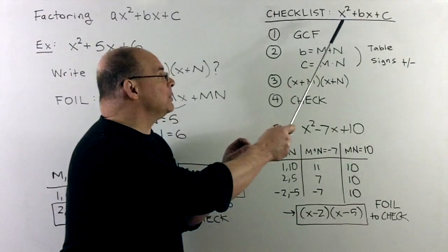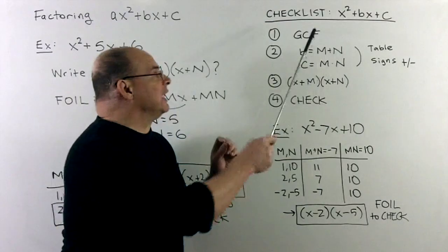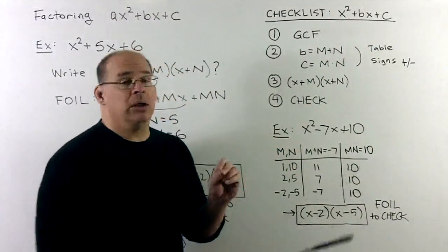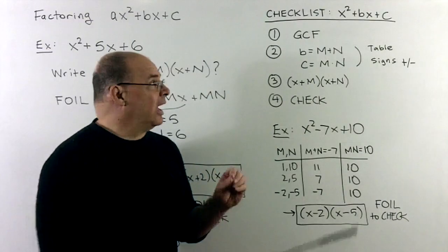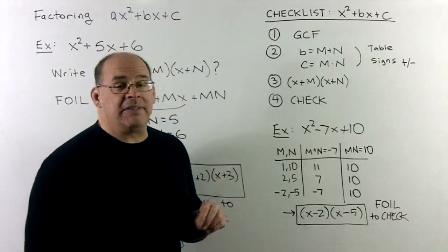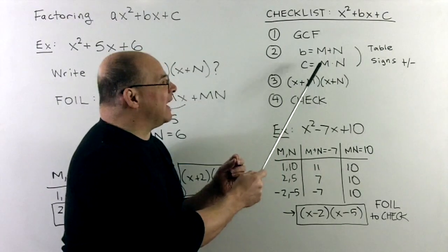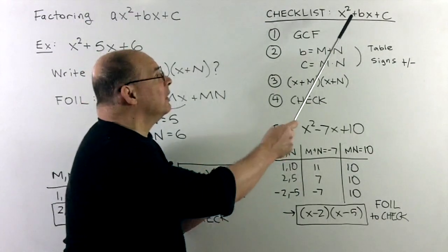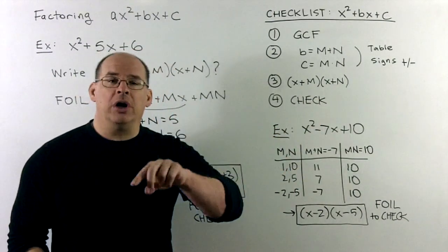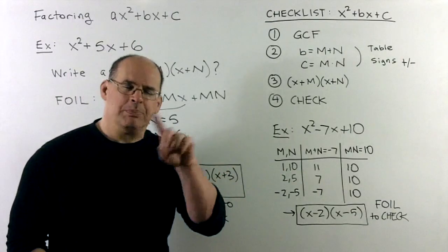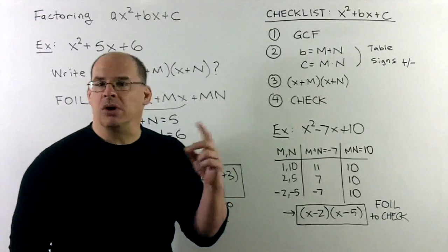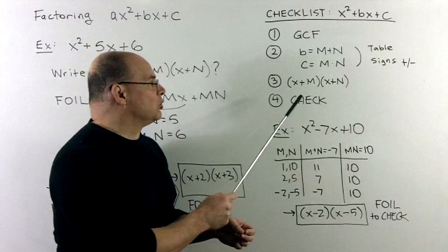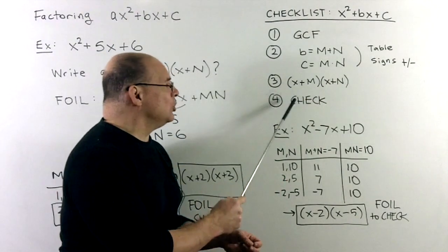Working on x squared plus bx plus c, you should always check for a greatest common factor first, as it can make the problem easier. Once you identify b and c, b is going to be m plus n and c is going to be m times n. Set that up in a table — what goes in the table depends on the signs of b and c. Once you find m and n, drop them into x plus, x plus, and check your answer by FOILing.